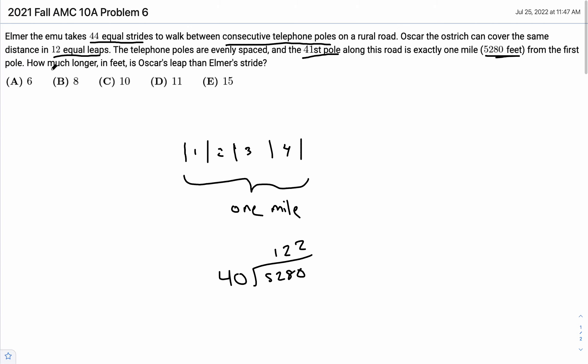Now let's go back to this problem. Elmer the emu takes 44 equal strides to walk between consecutive telephone poles. So 44 strides per gap, and each gap is 132 feet. 132 divided by 44, and we can see how long each of his strides are, which turns out to be 3.